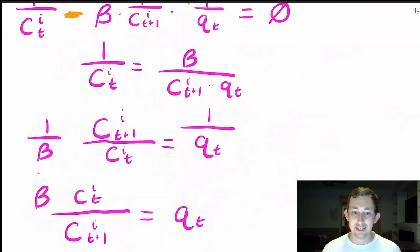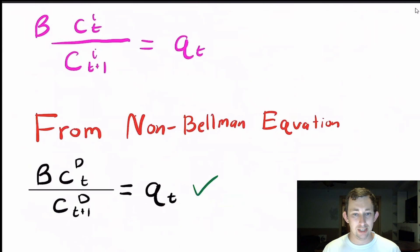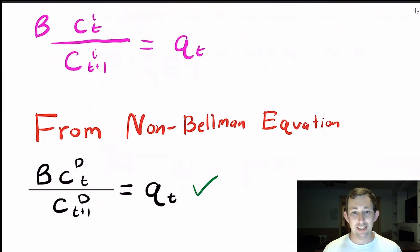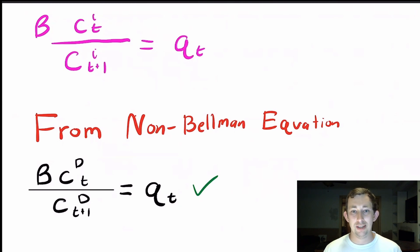What we get is that q_t equals beta times the ratio of the marginal utilities — which is exactly what we got from the non-Bellman first order condition. So this is a really handy way to take a complicated infinite-horizon problem and turn it into something simpler that makes the math easier for taking first order conditions. Hopefully this gives you a basic idea of how the Bellman equation works and how you form it. If it did, make sure to like and subscribe and we'll see you next time.